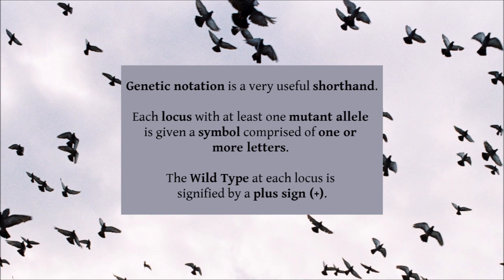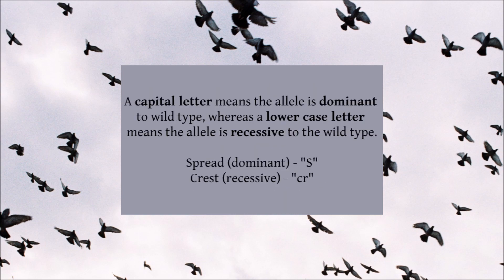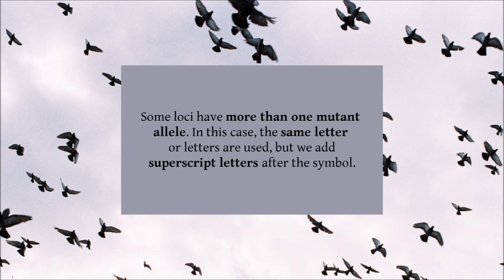The system is quite simple. Each locus with at least one mutant allele is given a symbol comprised of one or more letters. The wild type at each locus is signified by a plus sign. The first letter of the mutant allele symbol gives us some valuable information: a capital letter means the allele is dominant to wild type, whereas a lowercase letter means the allele is recessive to wild type. Some loci have more than one mutant allele — in this case, the same letter or letters are used, but we add a superscript after the symbol.